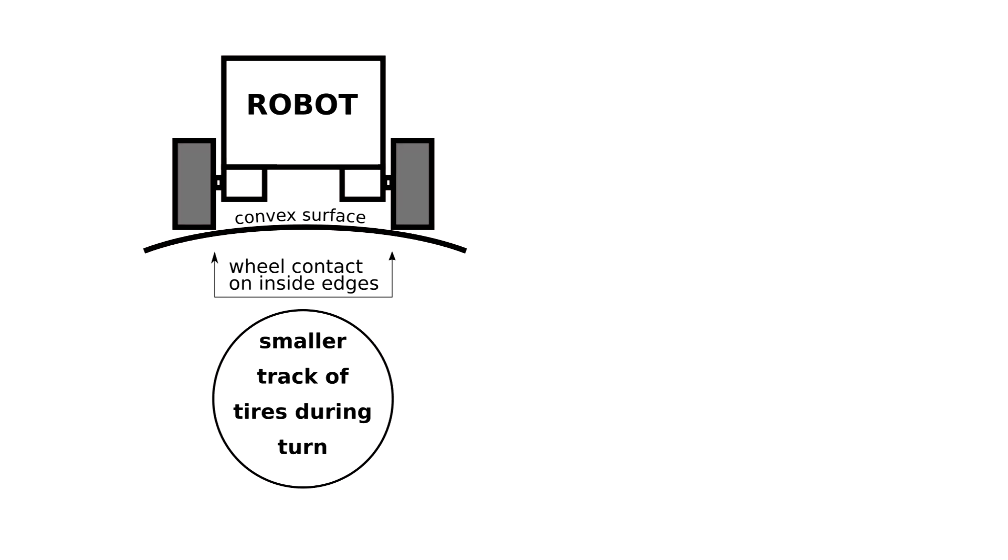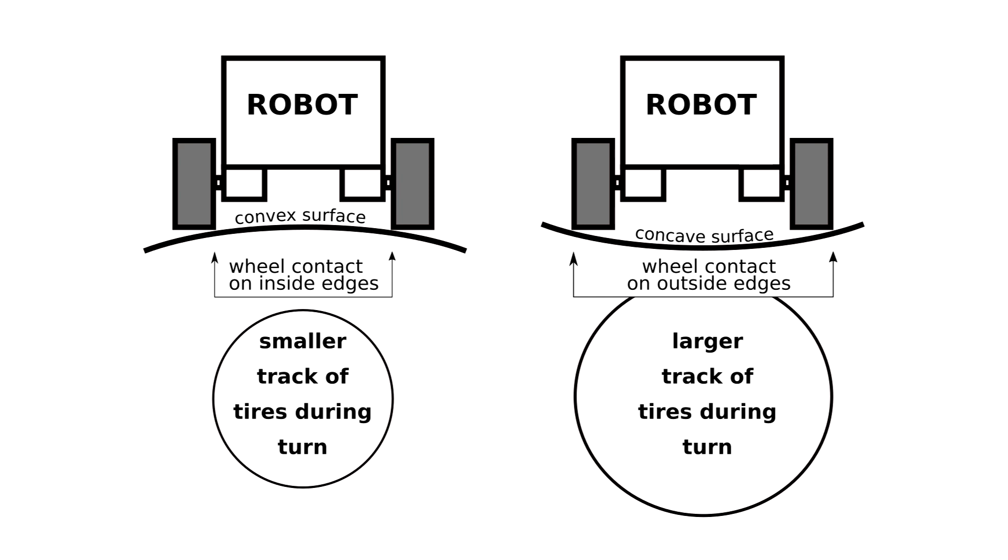If you forced the robot to run on just the inner edges of the tires, it would turn more, because it runs around a smaller circle. If you use only the outer edges, it wouldn't turn as much.